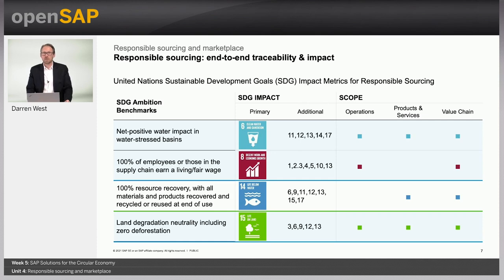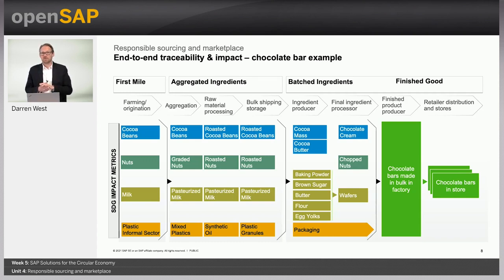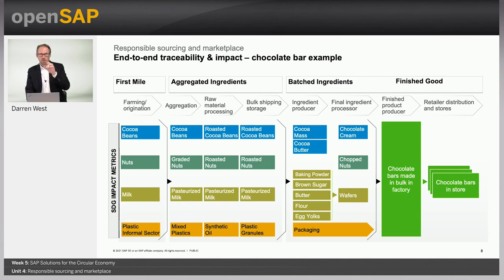Let's look at how we can record this information in our systems. On this next slide we show an example of a chocolate bar — both the product and the packaging — but this can apply to any consumer good. Working from left to right, the first mile is the farming or origination of materials. Here we record information about cocoa beans from Ghana, cashew nuts from Côte d'Ivoire, milk from a farm in Switzerland, and plastic picked in Indonesia. As well as the material information — volume, price, quantity, quality — we also record social and environmental metrics, such as whether the farmer is paid a fair wage or whether those cocoa beans are from a forest where the rainforest has been cut down.